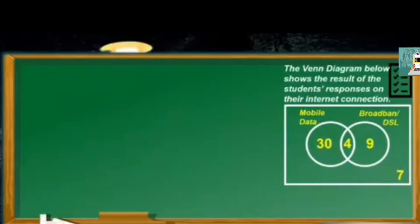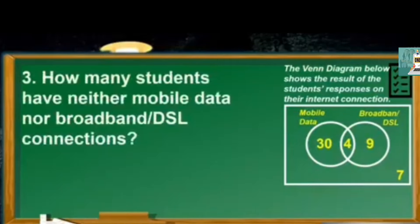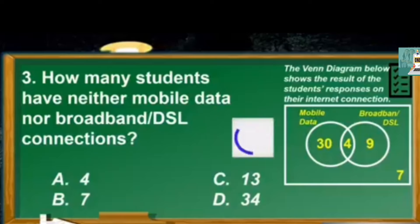Using the same Venn Diagram. How many students have neither mobile data nor broadband or DSL connections? A4, B7, C13, D34. The correct answer is B7.